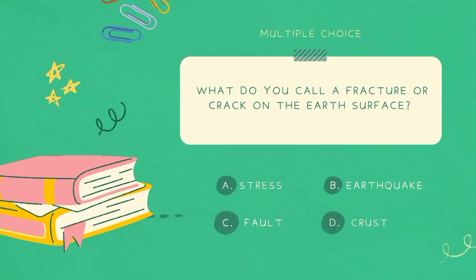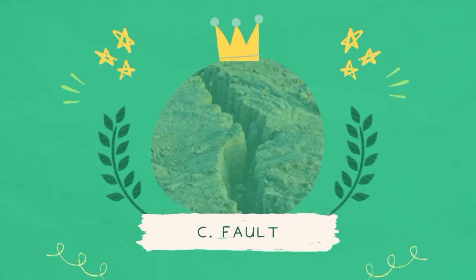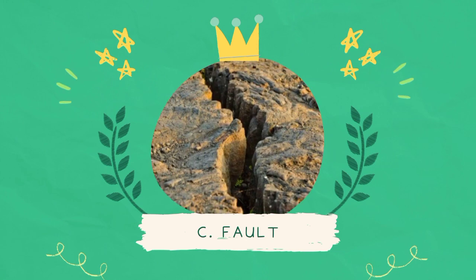What do you call a fracture or crack on the earth's surface? A. Stress. B. Earthquake. C. Fault. D. Crust. The answer is C. Fault.